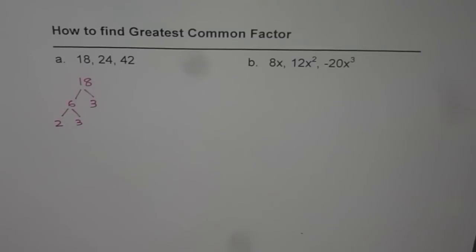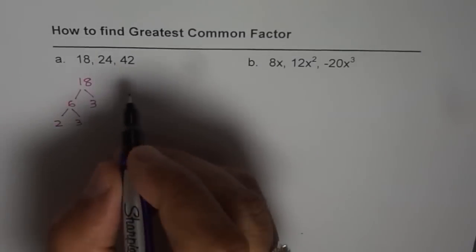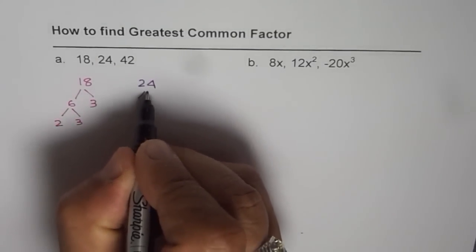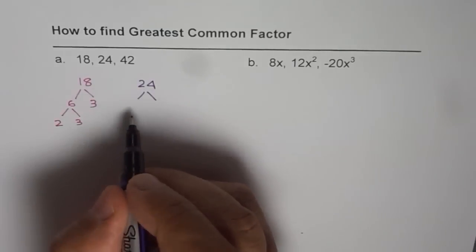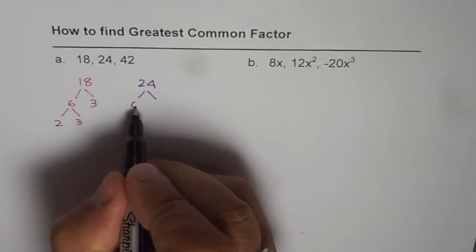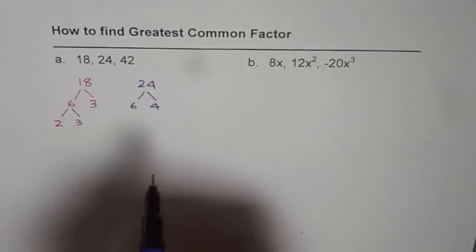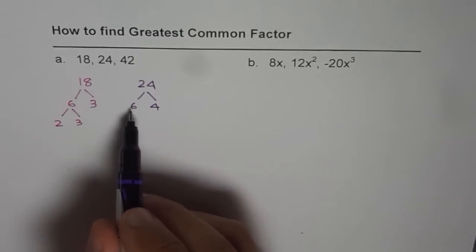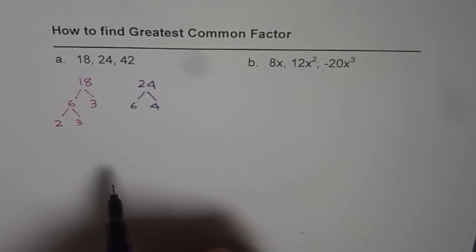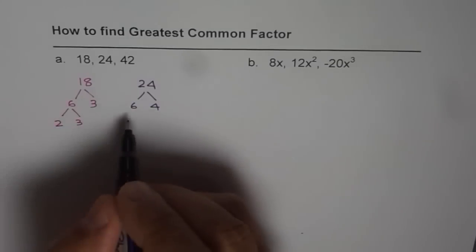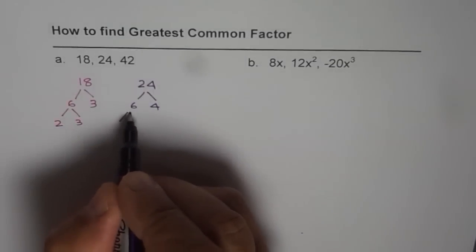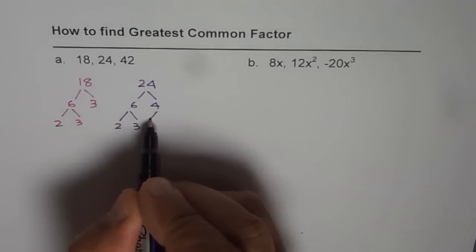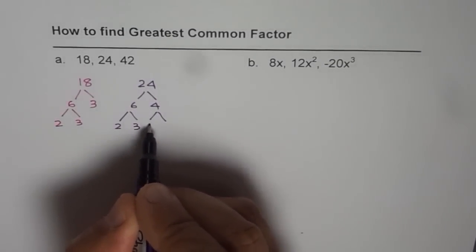Let's write down the factors for 24. 24 could be written as 6 times 4, so 6 and 4 are factors of 24 — when you multiply 6 and 4 you do get 24. Now 6 could be 2 times 3, and 4 is 2 times 2.